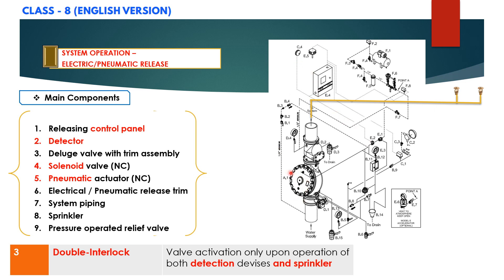but the deluge valve A1 will not open until a sprinkler opens, relieving supervisory pressure from the sprinkler system. Since this system piping line is connected through an air compressor as you can see on your screen.